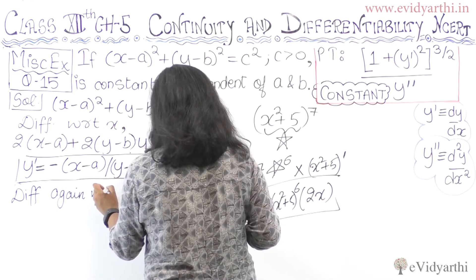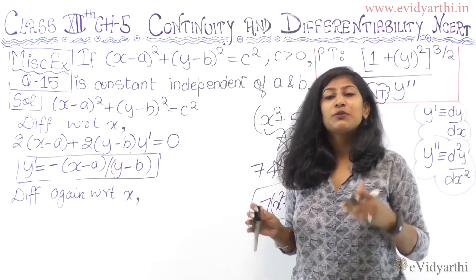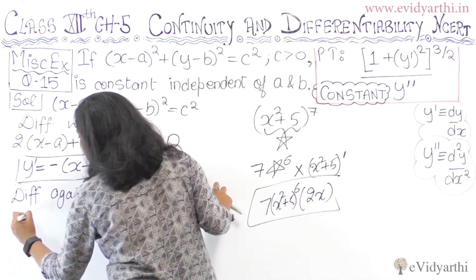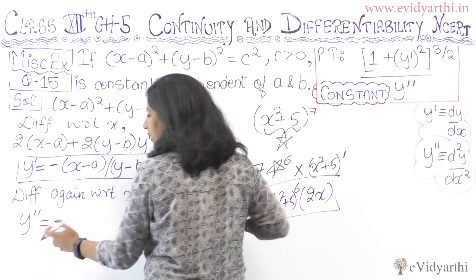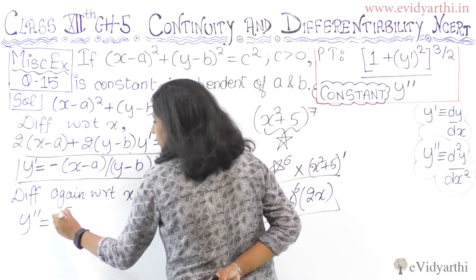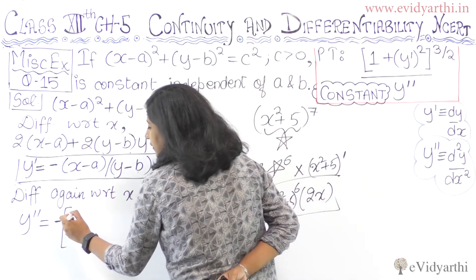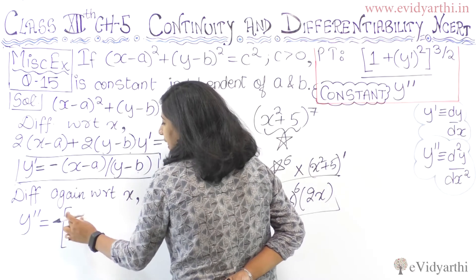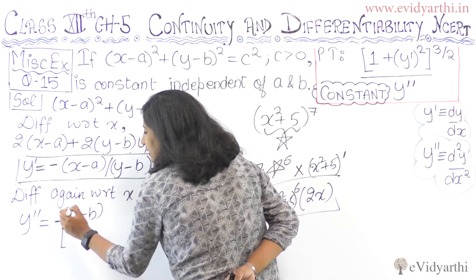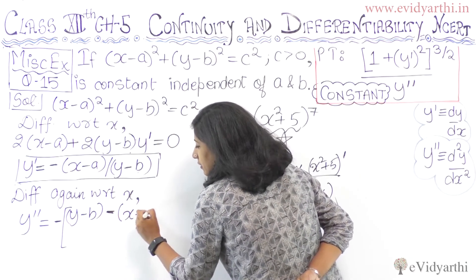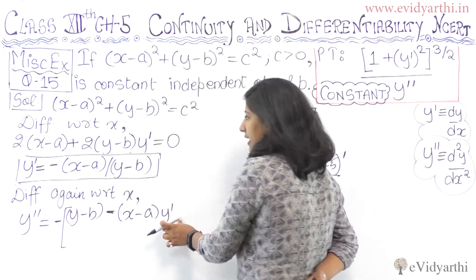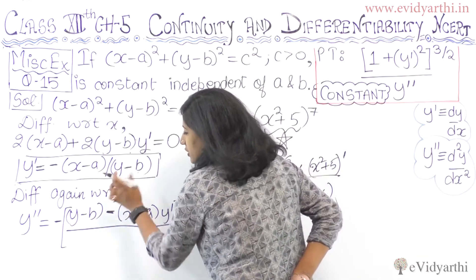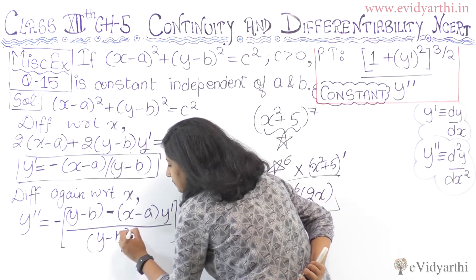So y double-dash is going to be negative — the constant negative is minus 1. First derivative: u-dash is the derivative of (x minus a), which is 1 (since x gives 1 and a is constant giving 0), multiplied by the second term (y minus b) as it is. Minus the first term (x minus a) as it is, times the derivative of (y minus b), which gives y-prime. All divided by (y minus b) squared.